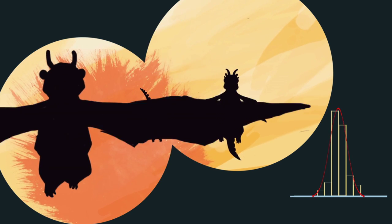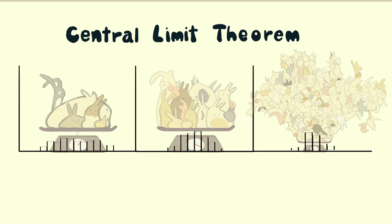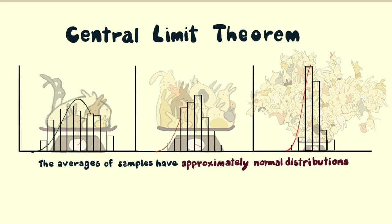So now we know that regardless of a true distribution, the central limit theorem shows that the average of values drawn from the distribution will always be approximately normal.